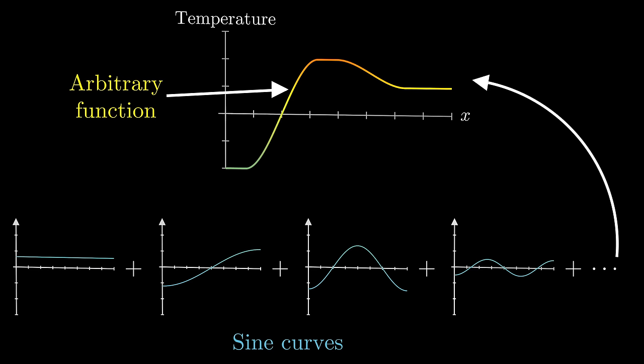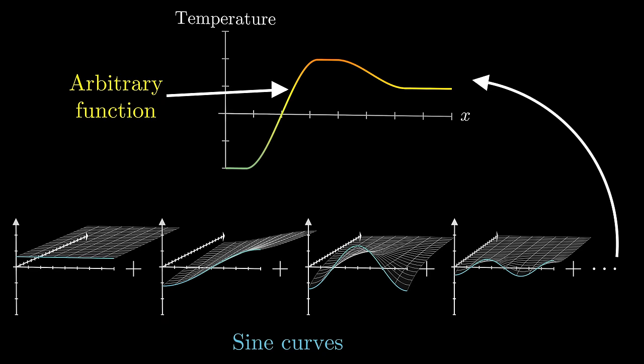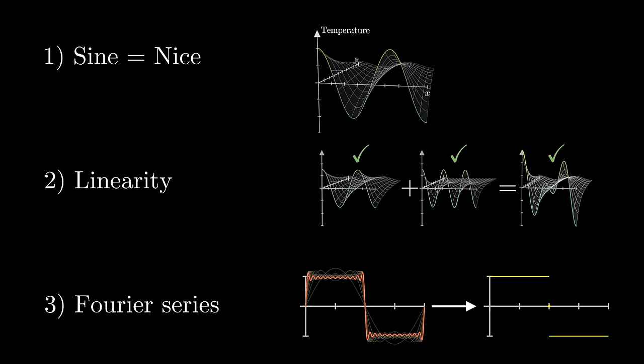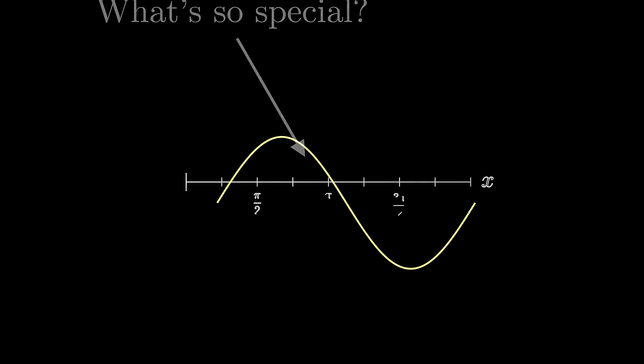For our heat equation, when you write a function as a sum of these waves, the relatively clean second derivatives makes it easy to solve the heat equation for each one of them. And, as you'll see, a sum of solutions to this equation gives us another solution. And so, in turn, that will give us a recipe for solving the heat equation for any complicated distribution as an initial state.